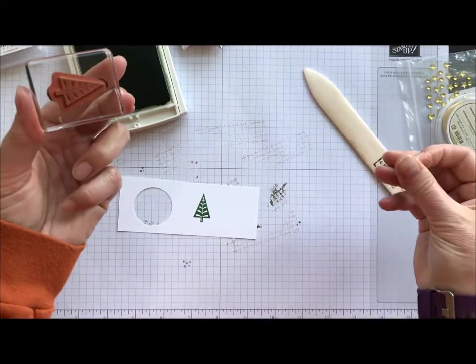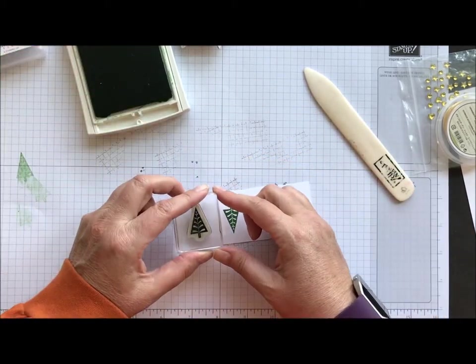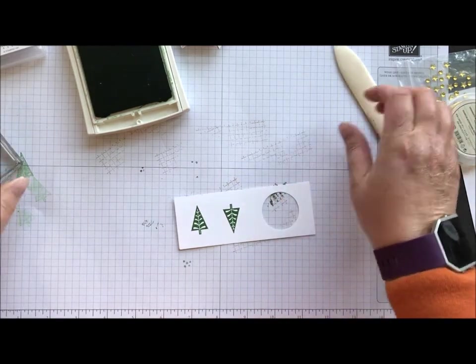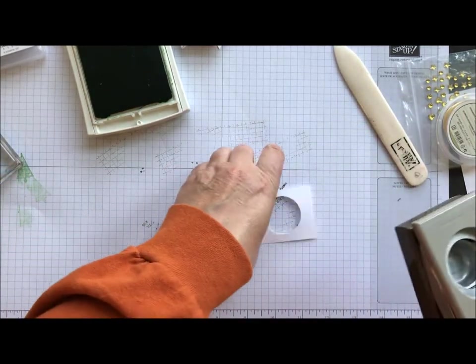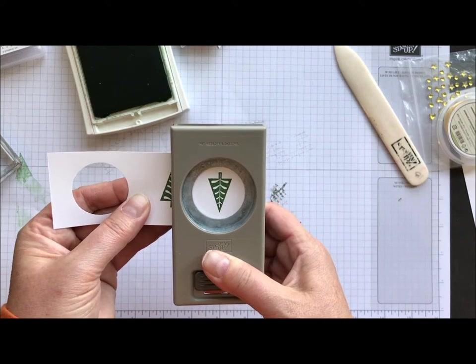All right, Bella, keep your hair out of my ink pads. Let's do that again. Now we should be cooking. Yes, much much better. I have a 1 3 8 circle punch and I'm just going to punch my little tree out.